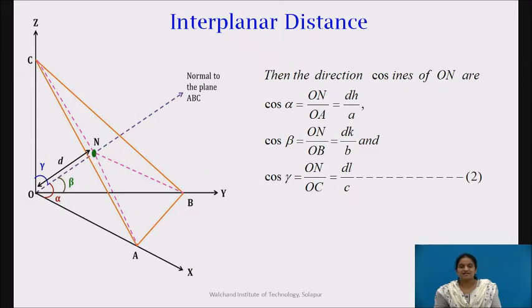Again, consider triangle ONB and ONC and calculate the value of cos beta and cos gamma. Let's simplify and let us call it as equation number 2.